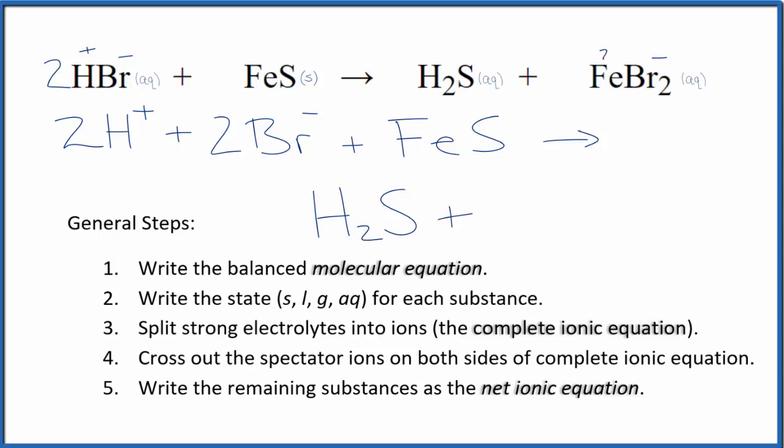It's 1 minus, and we have two of them. So the iron is going to be 2 plus. We'll have the iron 2 ion. And then we'll have two of these bromide ions. So this is the complete ionic equation.